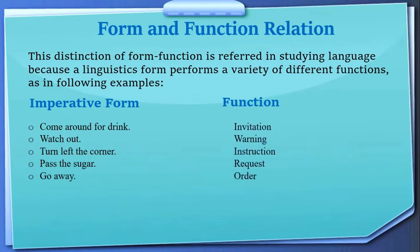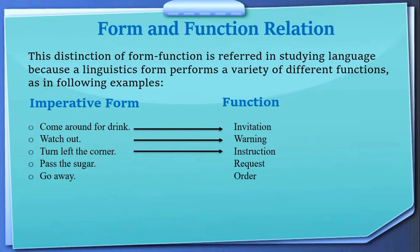— such as: 'come around for a drink,' 'watch out,' 'turn left at the corner,' 'pass the sugar,' 'go away' — these all have different functions. 'Come around for a drink' is an invitation. 'Watch out' is a warning. 'Turn left at the corner' is an instruction. 'Pass the sugar' is a request. 'Go away' is an order. So the same imperative form serves many different functions in language.